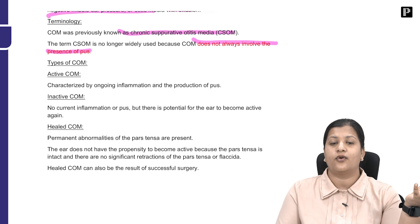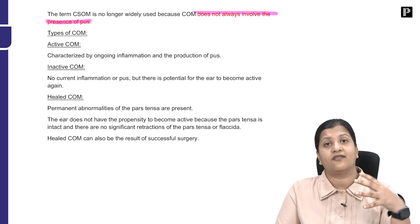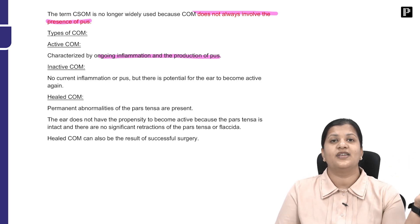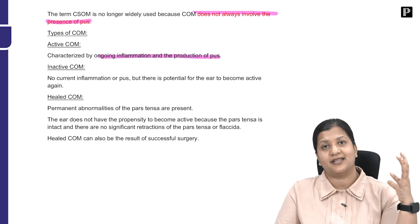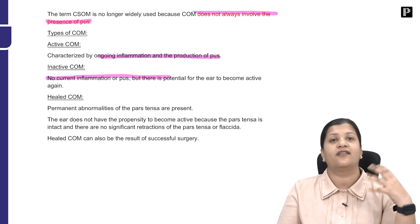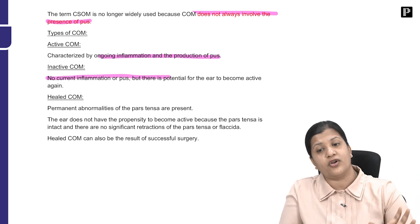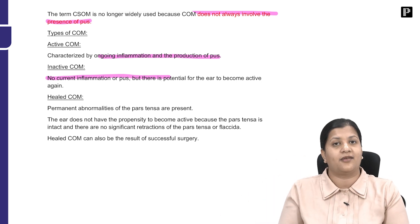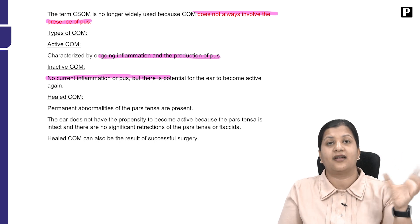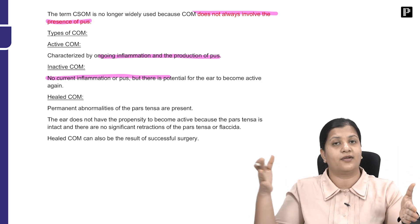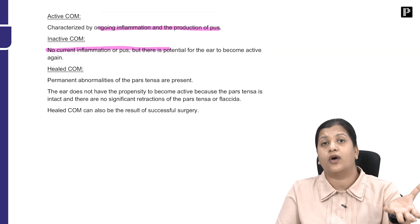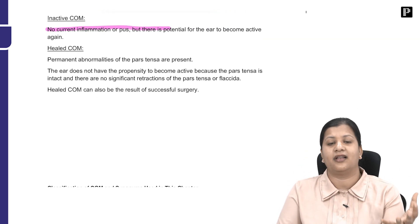We have different types of chronic otitis media: active and inactive. Active COM is characterized by ongoing inflammation and the presence of pus. Inactive COM has no ongoing inflammation or pus, but has the potential to become active again — at the moment it is dry, but it can become active if water enters, there is a new RTI, or there is a new infection in the middle ear.